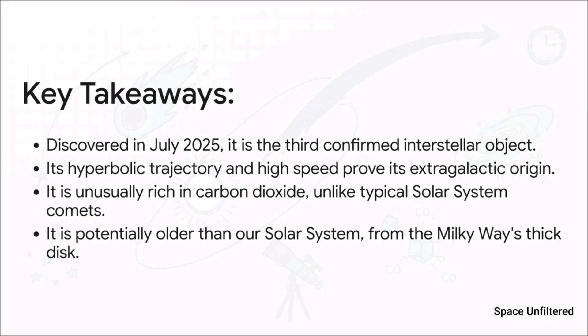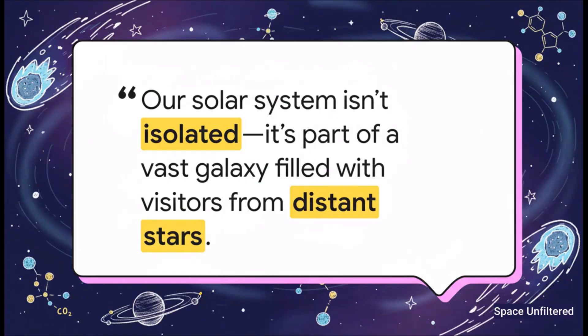To summarize the key points: 3I Atlas is the third confirmed interstellar visitor, identified by its unbound hyperbolic trajectory. Its chemical composition is dominated by carbon dioxide, a stark contrast to comets from our own solar system, and its path suggests it is an ancient object, possibly older than our sun, originating from the Milky Way's thick disk.